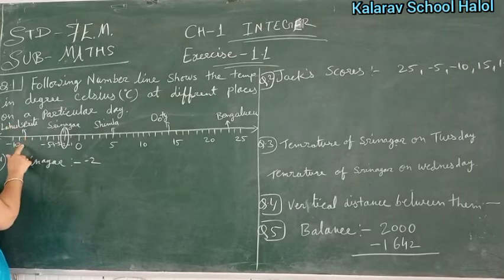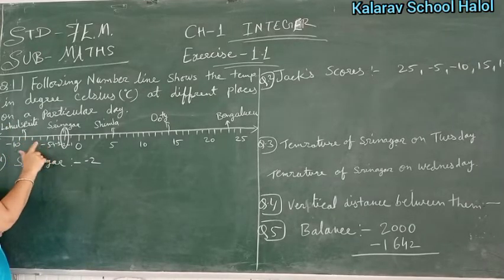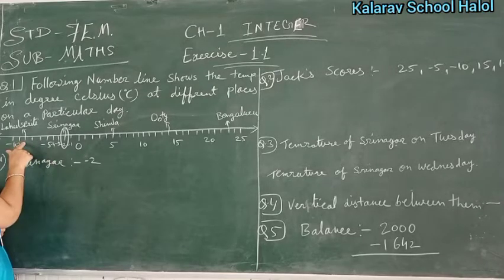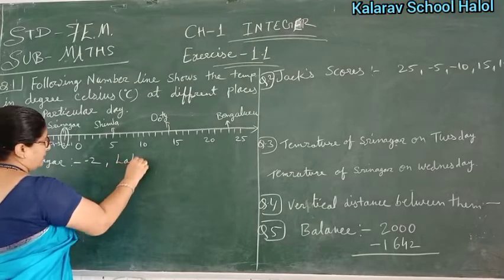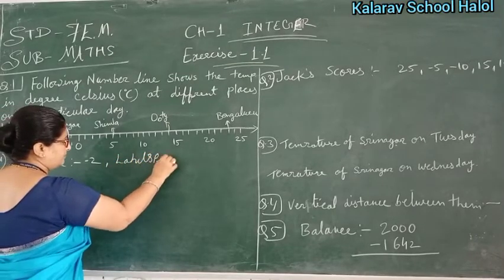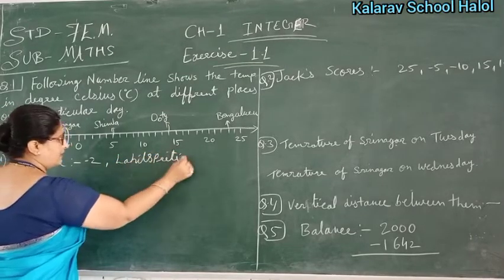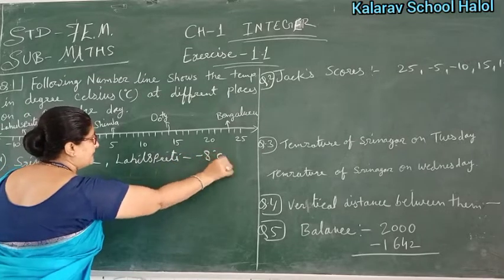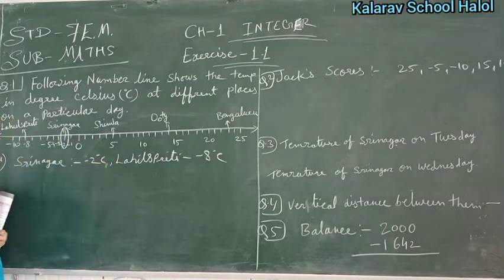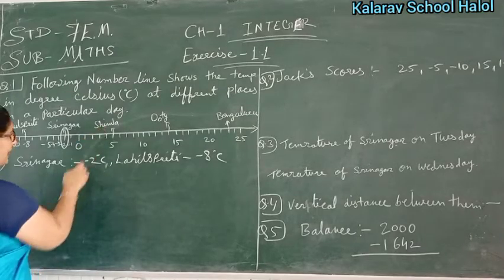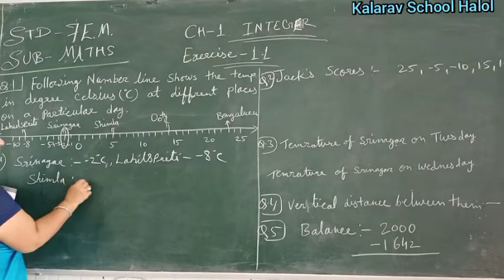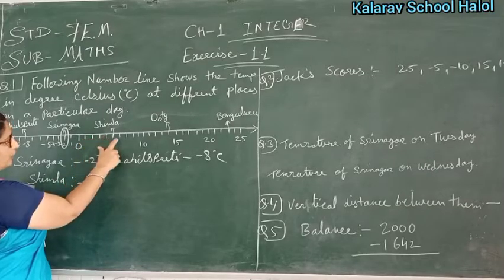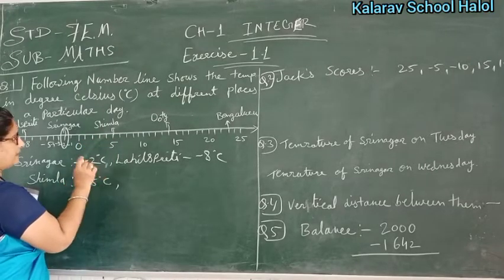Now, what is the temperature of Lahul Spiti? Counting from here: minus 5, minus 6, minus 7, minus 8. So the answer for Lahul Spiti is minus 8 degree Celsius. Same way, Shimla — counting 1, 2, 3, 4, 5 — gives 5 degree Celsius.